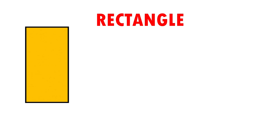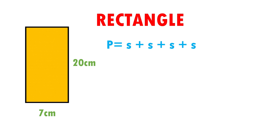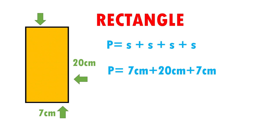Let's see another example. Here I have a rectangle with measures of 7 cm times 20 cm. The formula to calculate the perimeter is perimeter equals side plus side plus side plus side. Now I am going to substitute data — instead of the variables, I am going to put their values. Perimeter equals 7 cm plus 20 cm plus 7 cm plus 20 cm. When adding 7 plus 20 plus 7 plus 20, it gives me that the perimeter measures 54 cm.